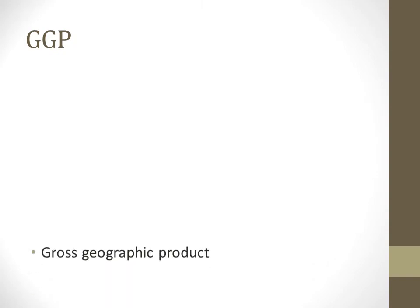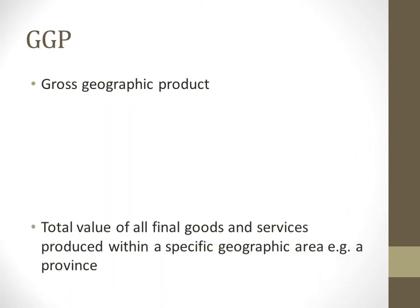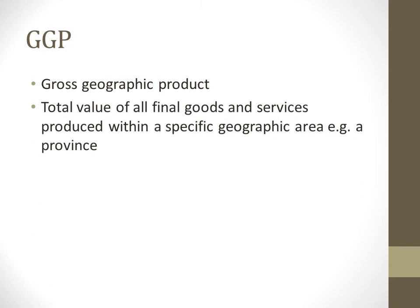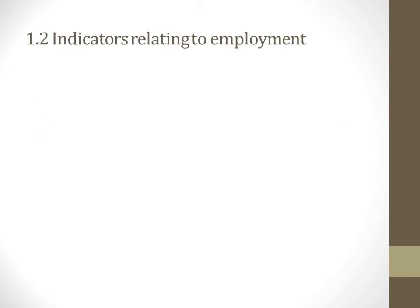Gross Geographic Product (GGP) is a relatively new concept — it's the total value of all final goods and services produced within a specific geographic area, for example a province. So for KZN, if there was mass production of shoes in KZN whereas other provinces don't produce as much, the GGP from KZN with regards to shoes would be very high.